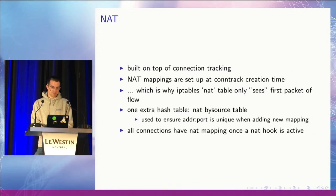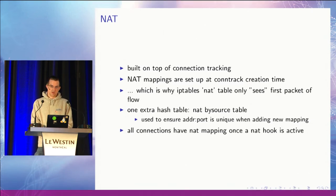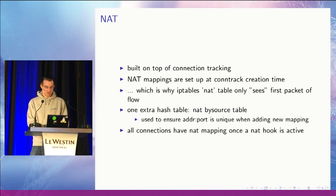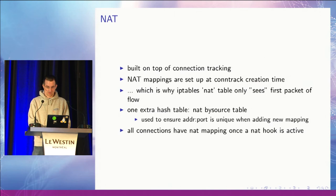We also have to maintain one extra hash table, the so-called bysource table, which all connections — regardless of whether they have NAT applied or not — get added to. This is because we have to detect the case where, for example, we have an outgoing connection from the router and another connection comes in that gets mapped to the same address — that would collide — so we have to detect this collision and provide a new port translation for the new connection.